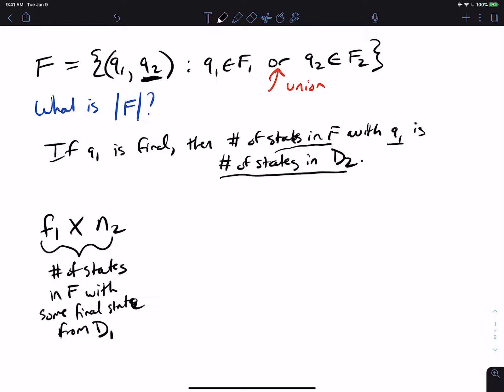But we can have the exact same type of situation if we have Q2 being a final state and Q1 being any state of the first machine. So we need to add on, well, how many final states are in the second machine, which is F2,